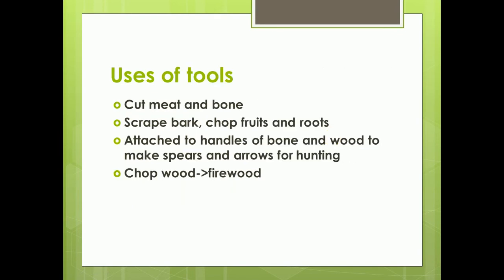These tools were used to cut meat and bone of animals, scrape bark, and chop fruits and roots — basically to help process food items. Stones were also attached to bone and wood to make spears and arrows for hunting. They were also used to chop wood for firewood, which gives us the idea that Paleolithic people already knew about fire.